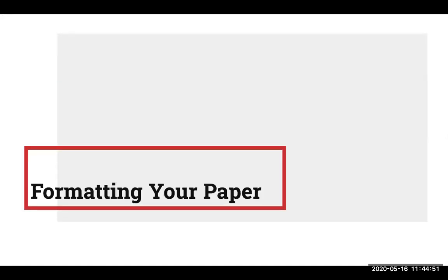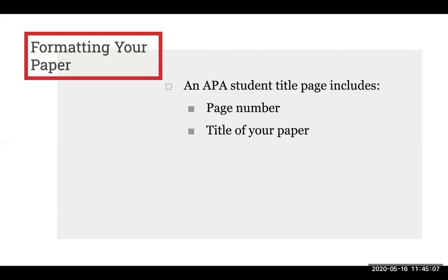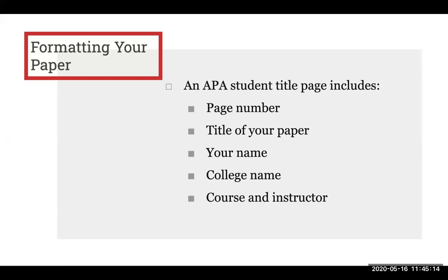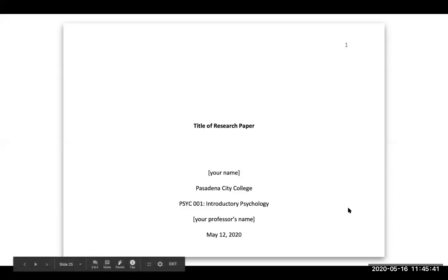Let's review how to format the rest of your paper according to APA style. APA style calls for what's called a student title page. An APA student title page includes the page number, the title of your paper, your name, your college's name, the course and instructor, and the date. Here's a sample title page. As you can see, it includes the page number in the top right corner, the title of the research paper centered and bold, and after a few lines, your name, the name of your college, your course, your professor's name, and the date.